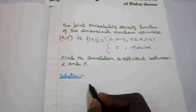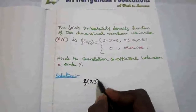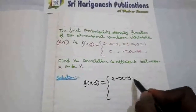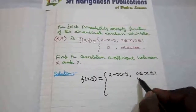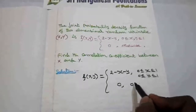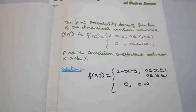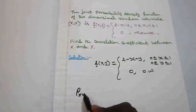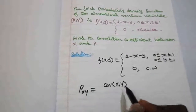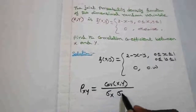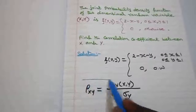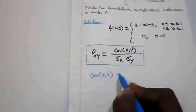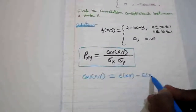The given function is the joint probability density function f(x, y) = 2 minus x minus y, for 0 ≤ x ≤ 1 and 0 ≤ y ≤ 1, 0 otherwise. For the correlation coefficient of two continuous random variables, the formula is: rho(x, y) = covariance of x and y divided by sigma_x times sigma_y. The covariance of x and y is E(xy) minus E(x) times E(y).